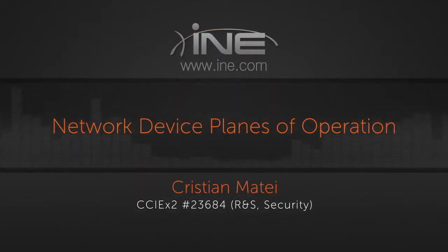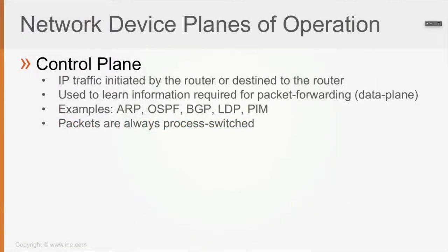Each network device, whether it's a switch, a router, a firewall, or even an IPS, operates through defined planes. Let's focus on routers, switches, and firewalls, which are the most commonly seen network devices in almost all networks. Other network devices exist, but from a numbers standpoint, they are less frequently encountered compared to routers, switches, and firewalls.